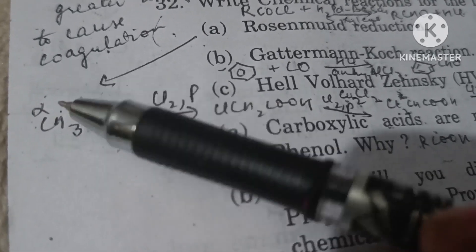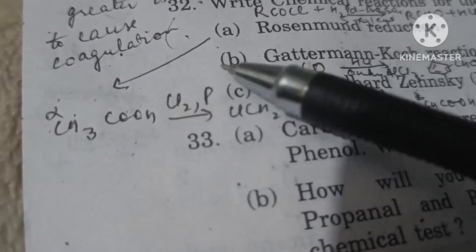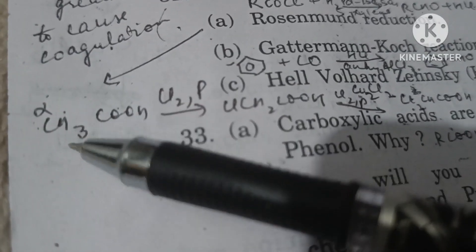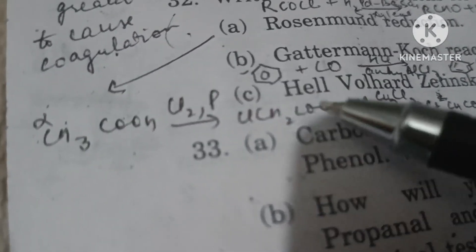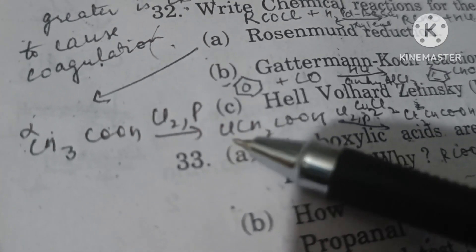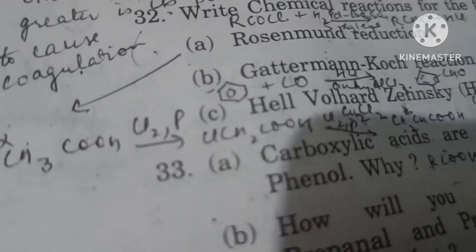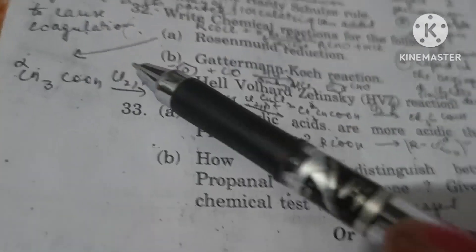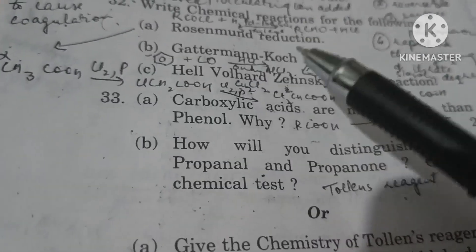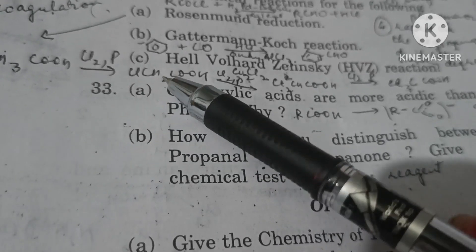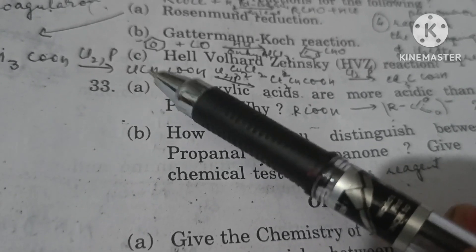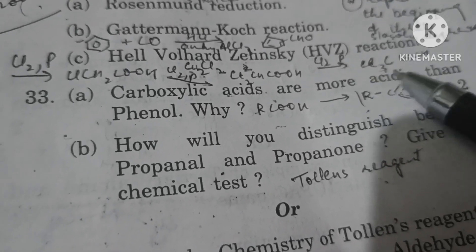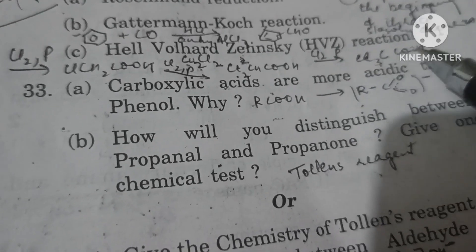In the Hell-Volhard-Zelinsky reaction, if halogen is in larger amounts, the displacement of alpha hydrogen with halogen occurs to a greater extent until all the alpha hydrogens are replaced with chlorine atoms.